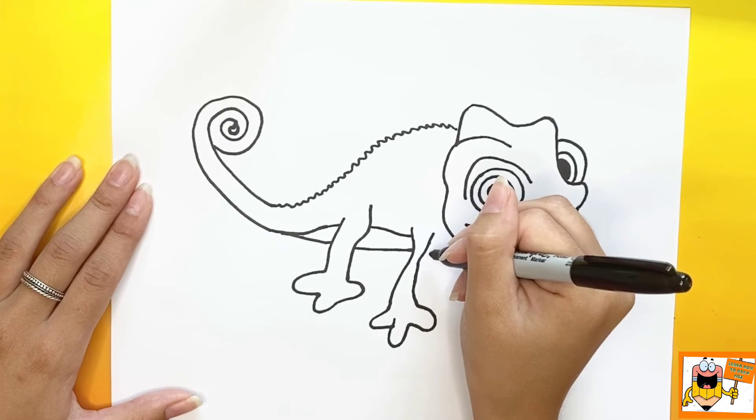Now for his last foot, it's going to be a little bit behind his body, so you're only going to be able to see part of it.